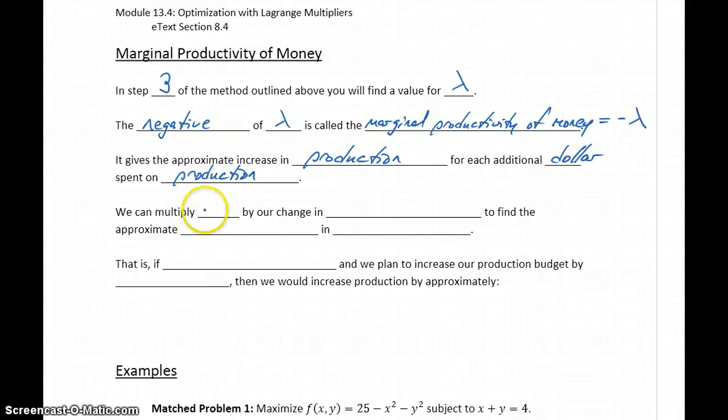We can multiply the opposite of whatever our value for lambda is by our change in production budget to find the approximate increase in production.